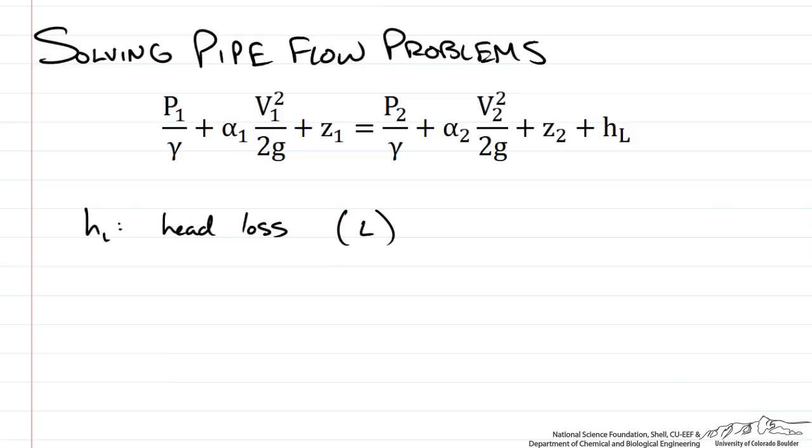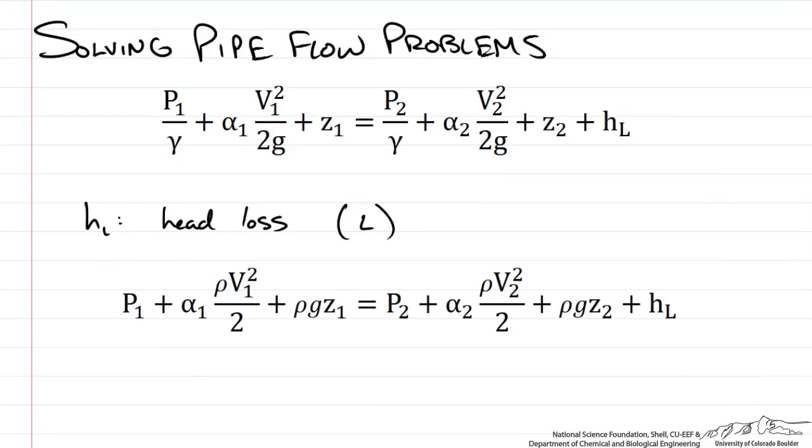Now other times the equation may be rewritten to look like the following. So in the second form of the equation, we have taken the specific weight of the fluid, marked here gamma, and multiplied it through. So now what that does is it changes the dimensions of each term. So as before the dimensions were length, now they are pressure. So it depends on how you want to represent each term and the energy losses that are associated with the pipe system.